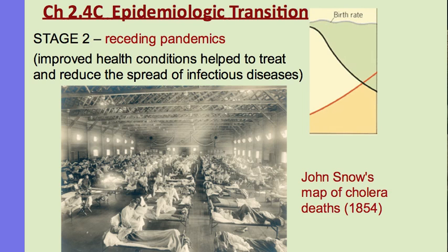Stage 2 corresponds to demographic transition stage 2, where the birth rate remains high but the death rate drops because of improvements in medicine, sanitation, health care, and knowledge of health care. The deaths associated with this stage reflect a medical improvement in reducing and treating the spread of the infectious diseases seen in stage 1. So whereas stage 1 had infectious diseases with no cure, stage 2 represents solutions to those diseases — people were able to live and not die from them.